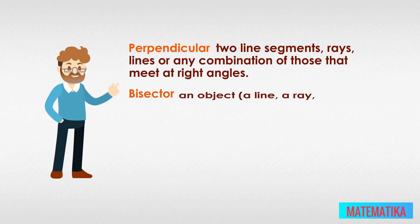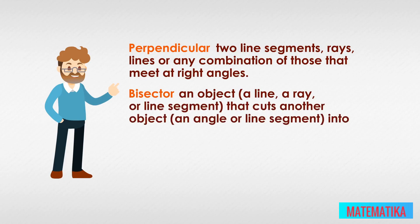A bisector is an object, a line, a ray, or line segment that cuts another object, an angle or line segment, into two equal parts. A bisector cannot bisect a line because, by definition, a line is infinite.